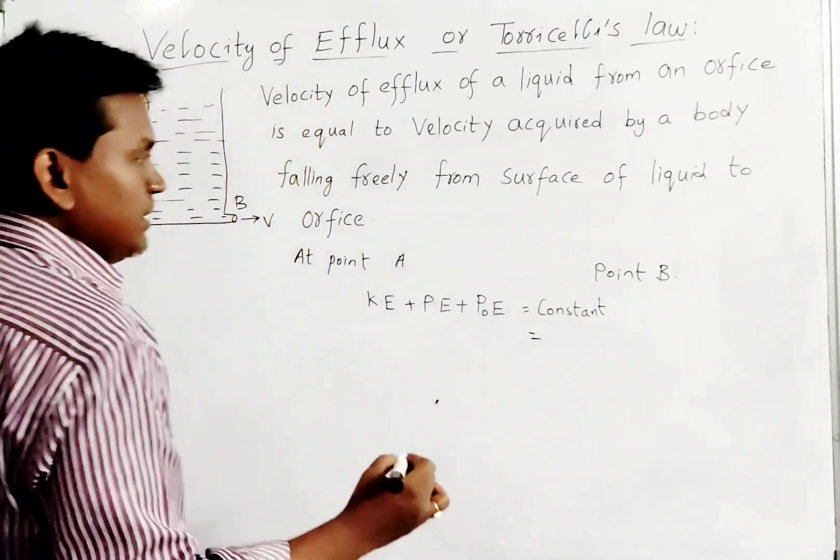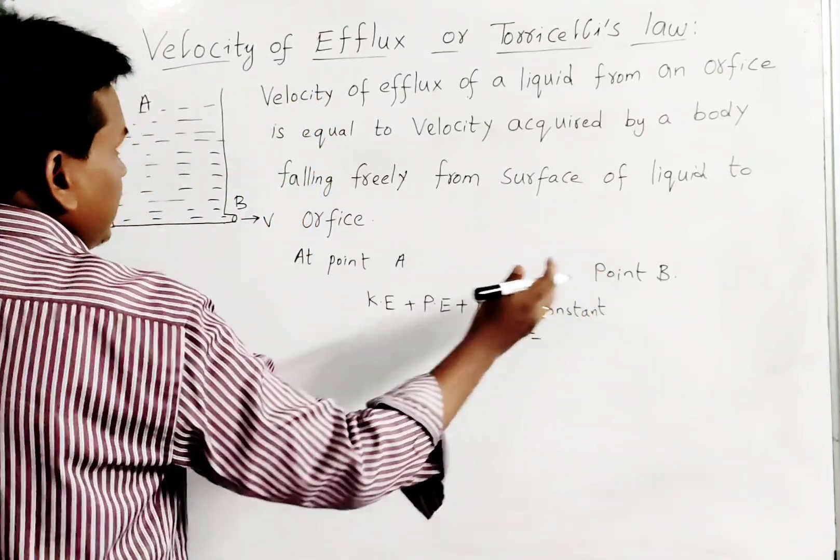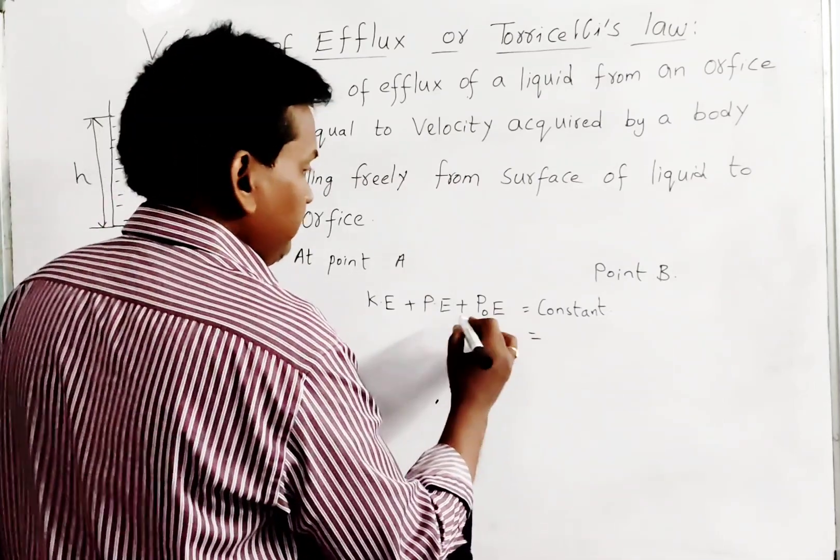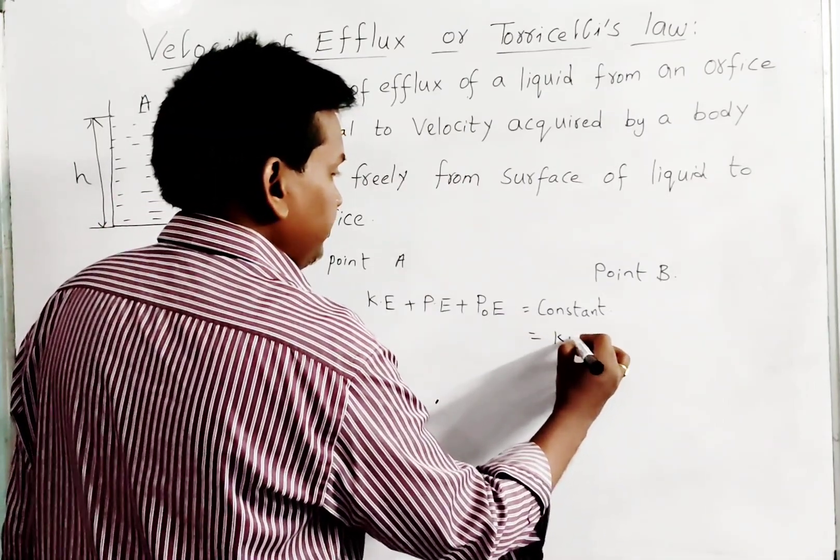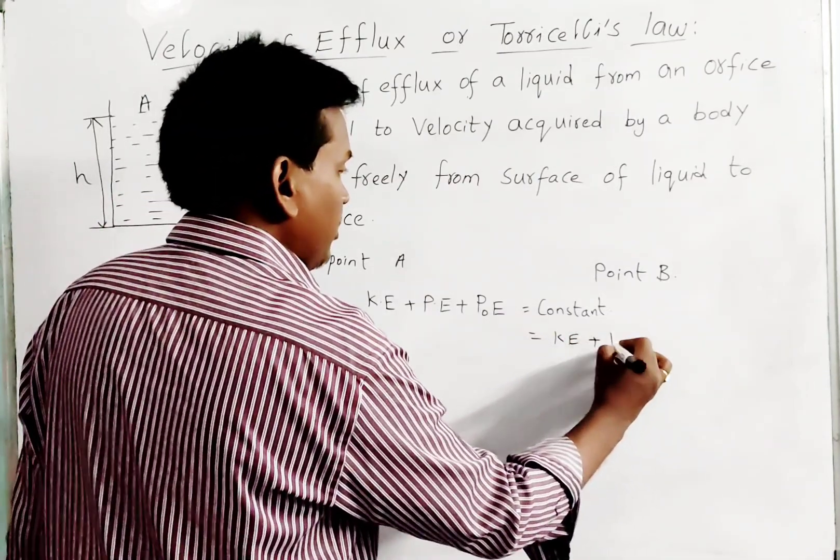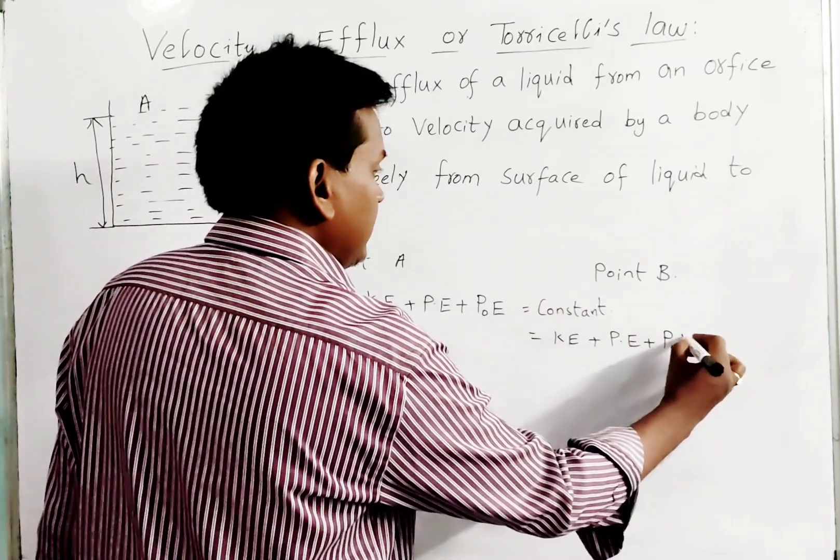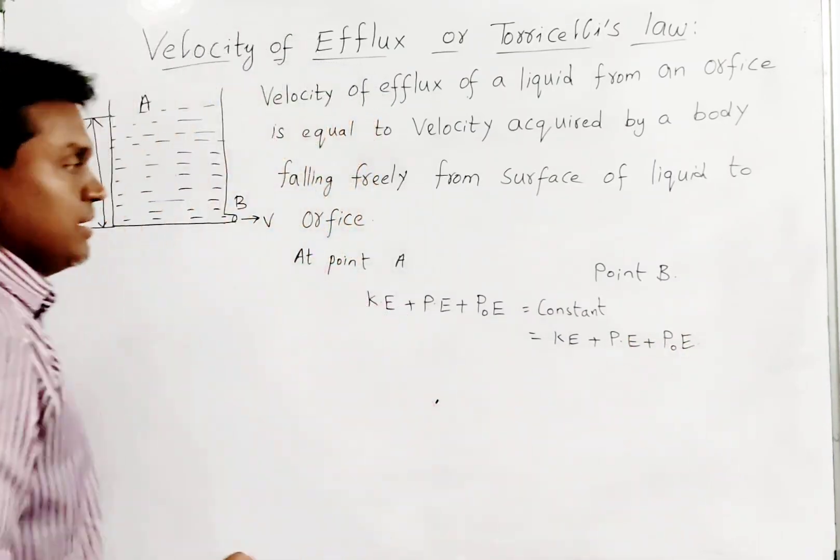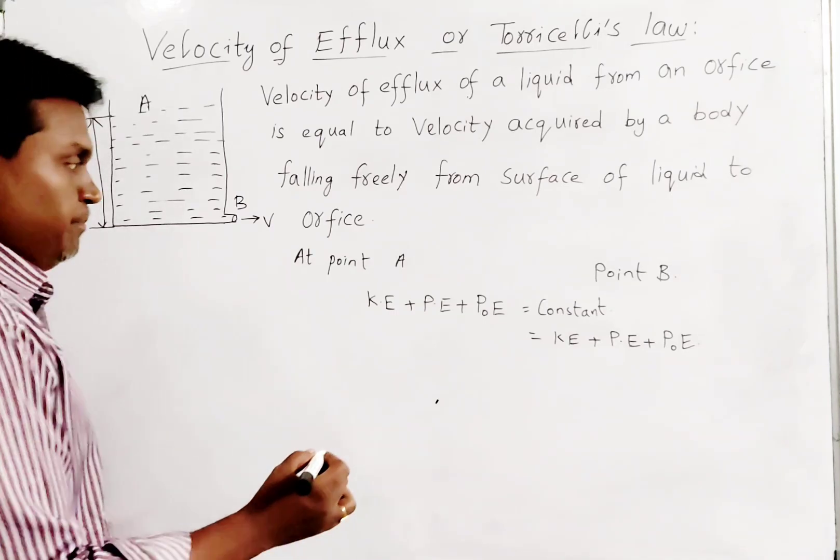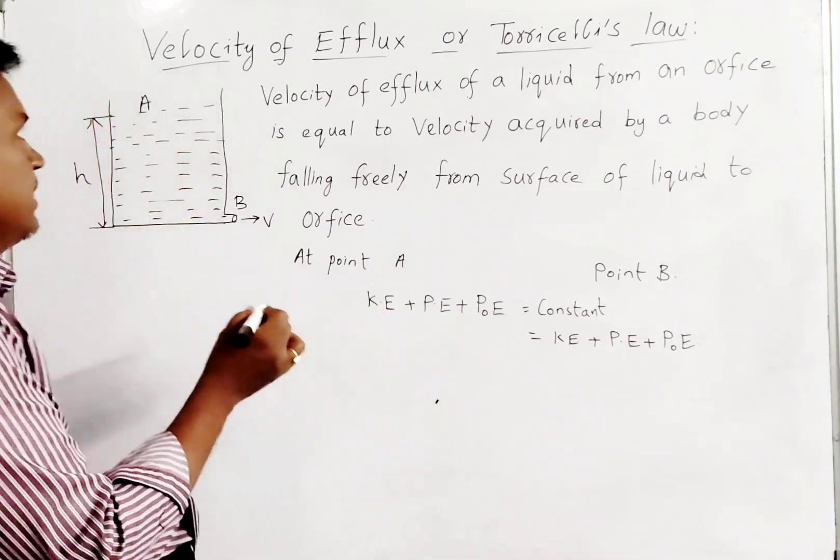That constant at point A equals the energy at point B. So that is equal to kinetic energy at point B plus potential energy at point B plus pressure energy at point B. We know that kinetic energy at point A...